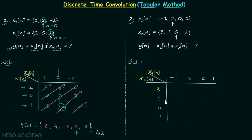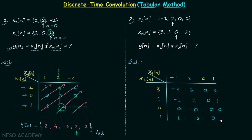To get the first row, multiply 3 by all elements of x1n: giving minus 3, 6, 0, 3. The second row multiplies 1 by all elements: minus 1, 2, 0, 1. The third row multiplies 0 by all elements: 0, 0, 0, 0. The fourth row multiplies minus 1 by all elements: 1, minus 2, 0, minus 1.